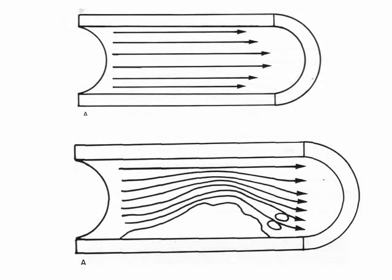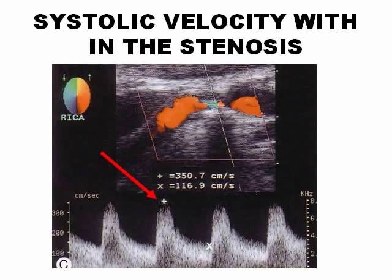In the area proximal to the stenosis there is laminar flow. After the stenosis there is turbulent flow. More importantly, there is a high velocity in the area of the stenosis because the same quantity of blood is passing through a smaller area — same blood, less area means more velocity. For example, a systolic velocity of 350 cm per second within the stenosis indicates significant stenosis in that area.